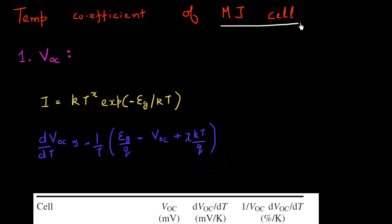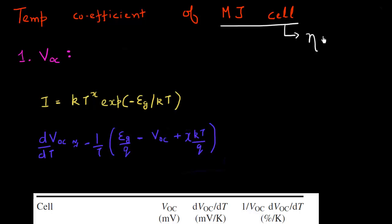Multi-junction based solar cells have the highest efficiency of solar energy conversion among all solar cell devices. Depending upon how many junctions you use — whether two junctions, three junctions, or four junctions — the efficiency of these multi-junction cells can be upward of 40% for energy conversion easily.